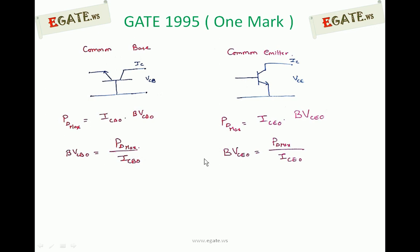For both equations, numerator is same. Only the denominator is different. And we know ICEO is larger than ICBO.